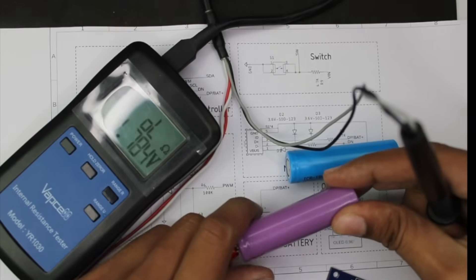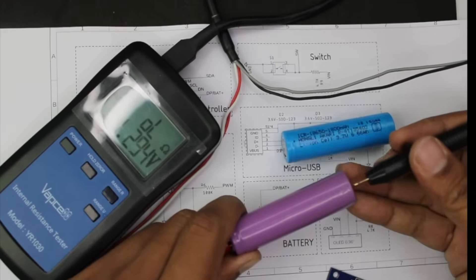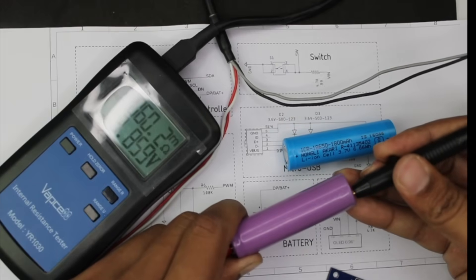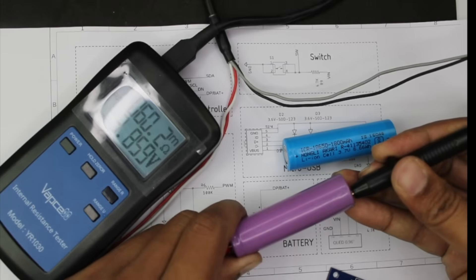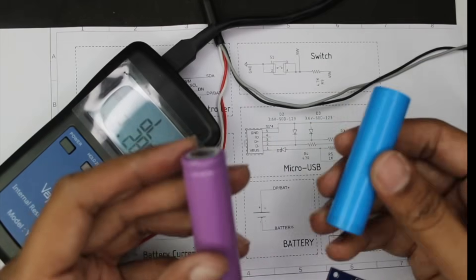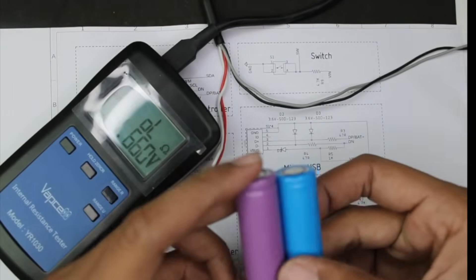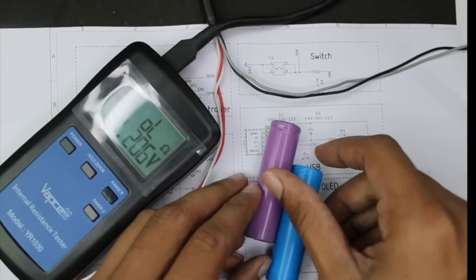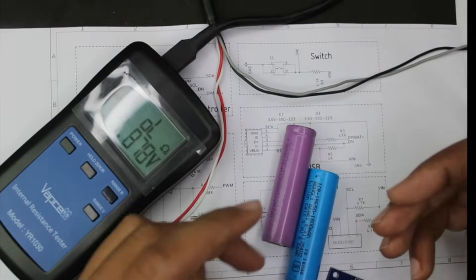Let's check the purple cell. This one shows about 60.2 milliohms, and with our IR meter we measured 55 milliohms. So yeah, around plus or minus 5 milliohms tolerance, but you can use it because you're just comparing one cell with another.